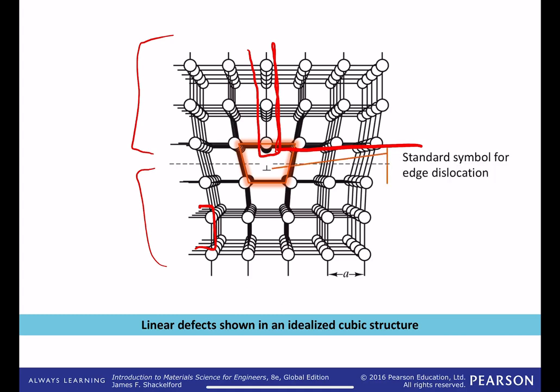So this little symbol here, this perpendicular-type symbol here, is what's given to what's called an edge dislocation. As you can see here, the extra plane of atoms here has resulted in a dislocation, and that exists in three dimensions. So all the way down the axis, looking straight into this perpendicular symbol, we have a row of those defects. And so that's a linear defect.